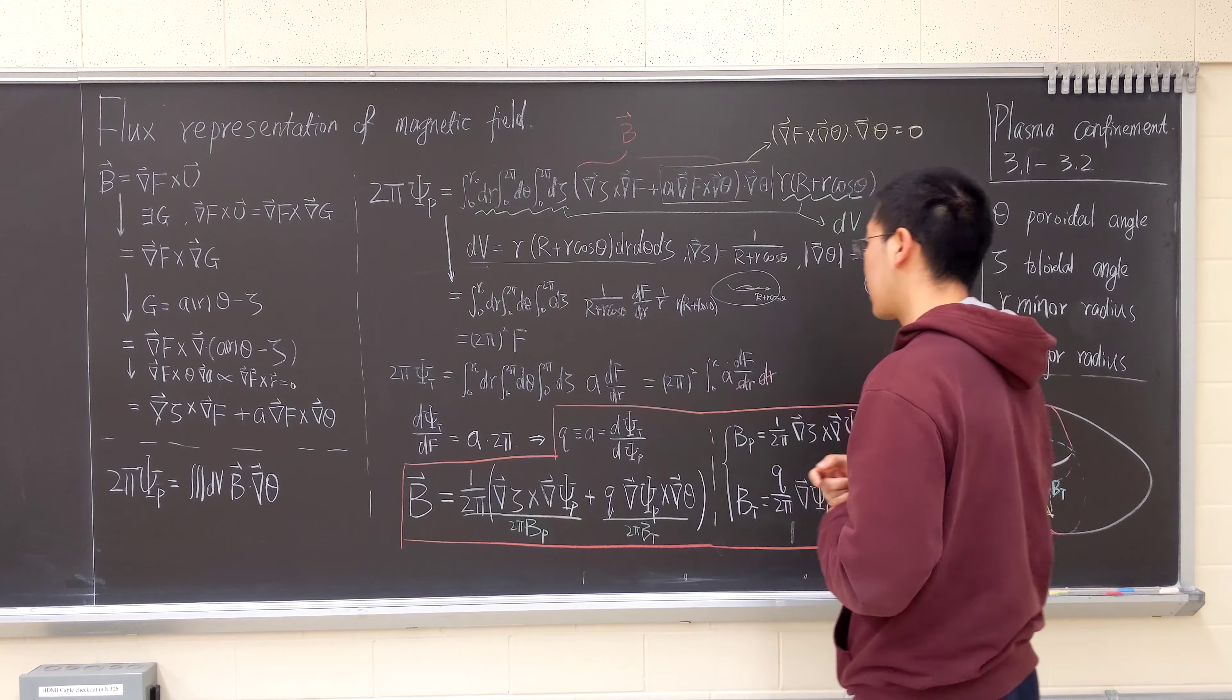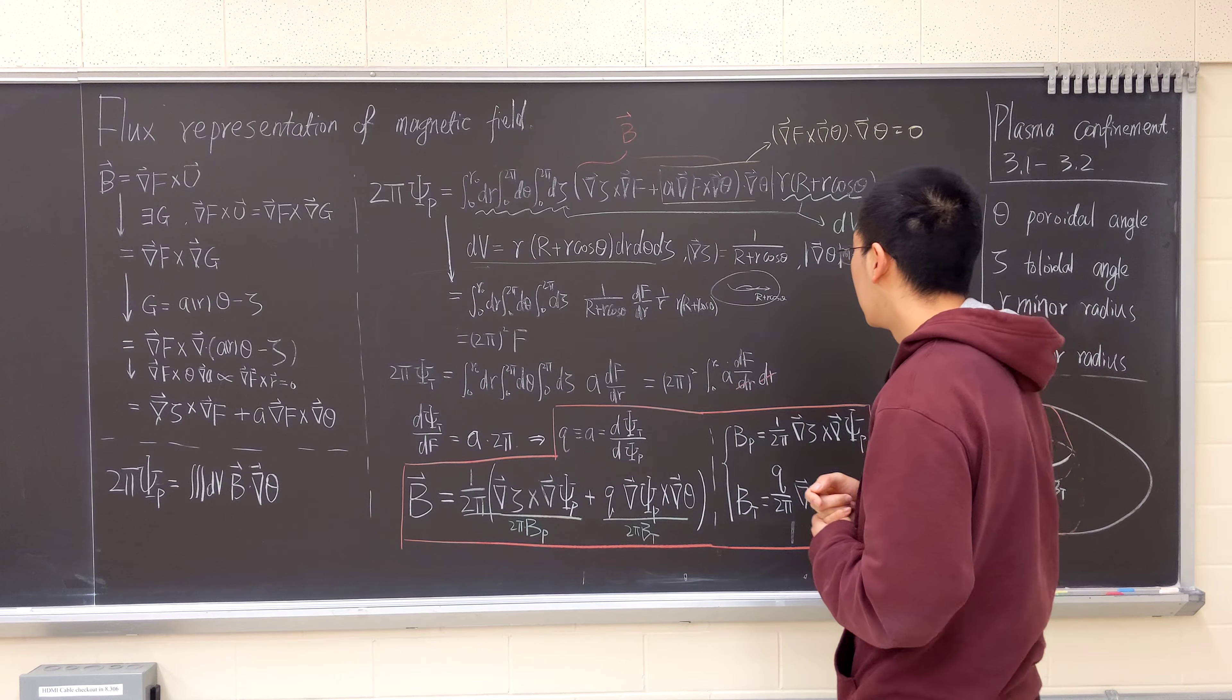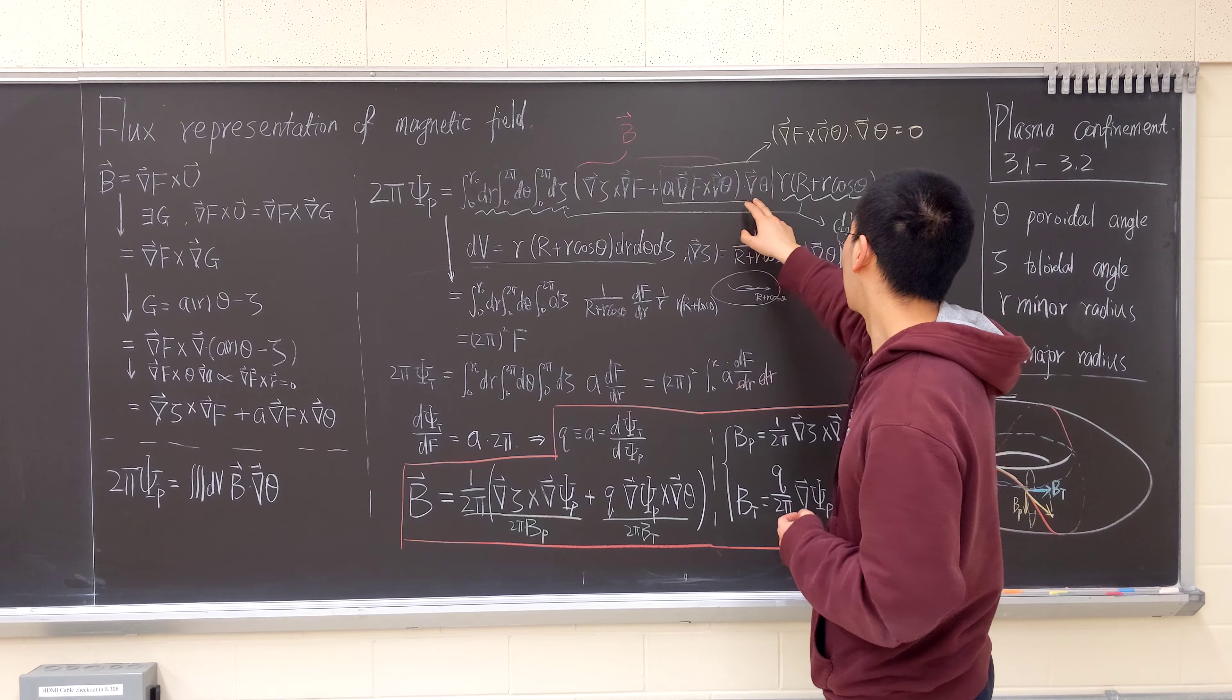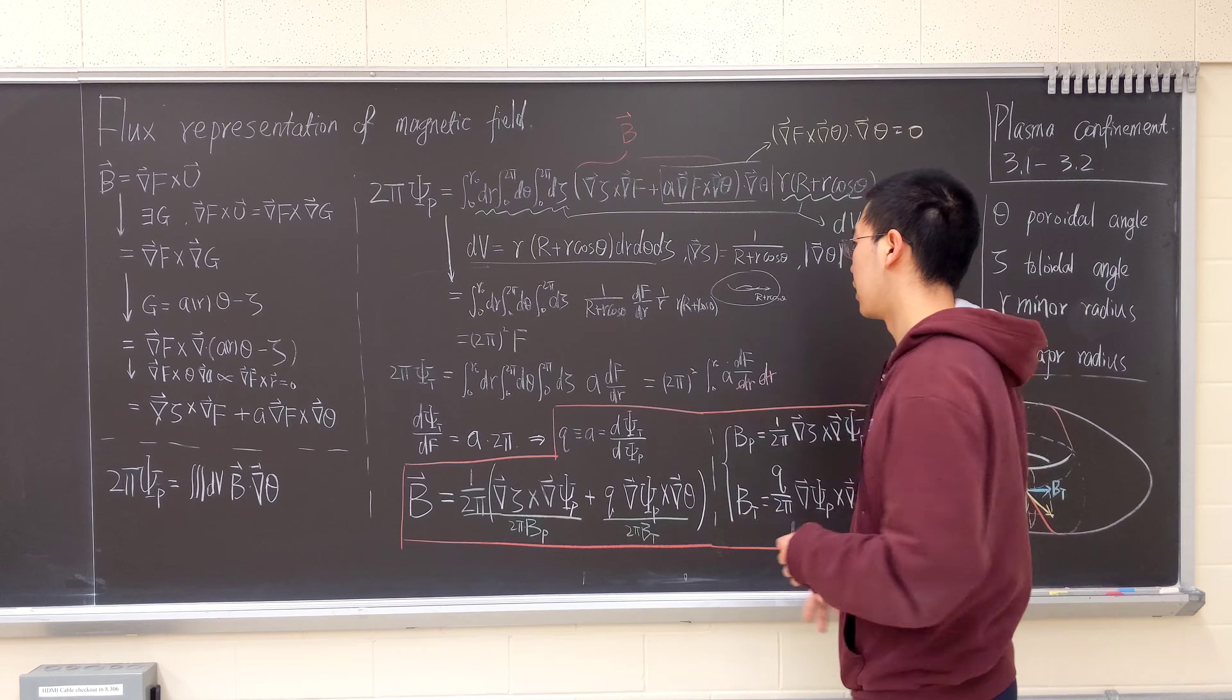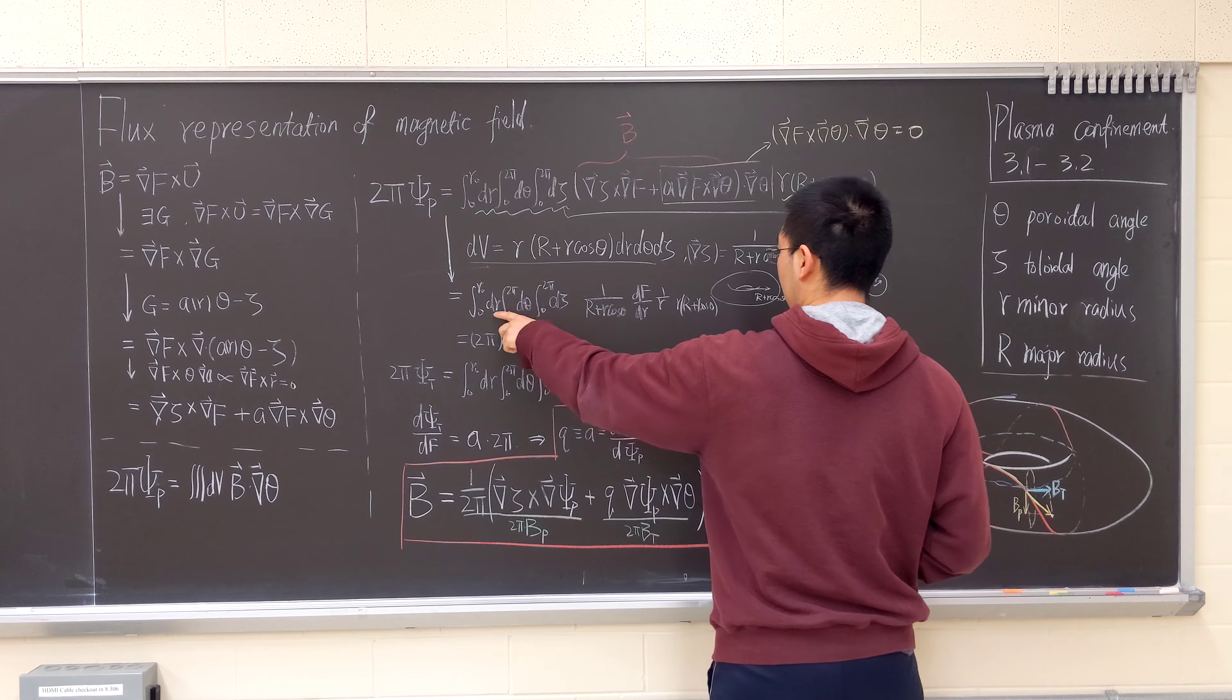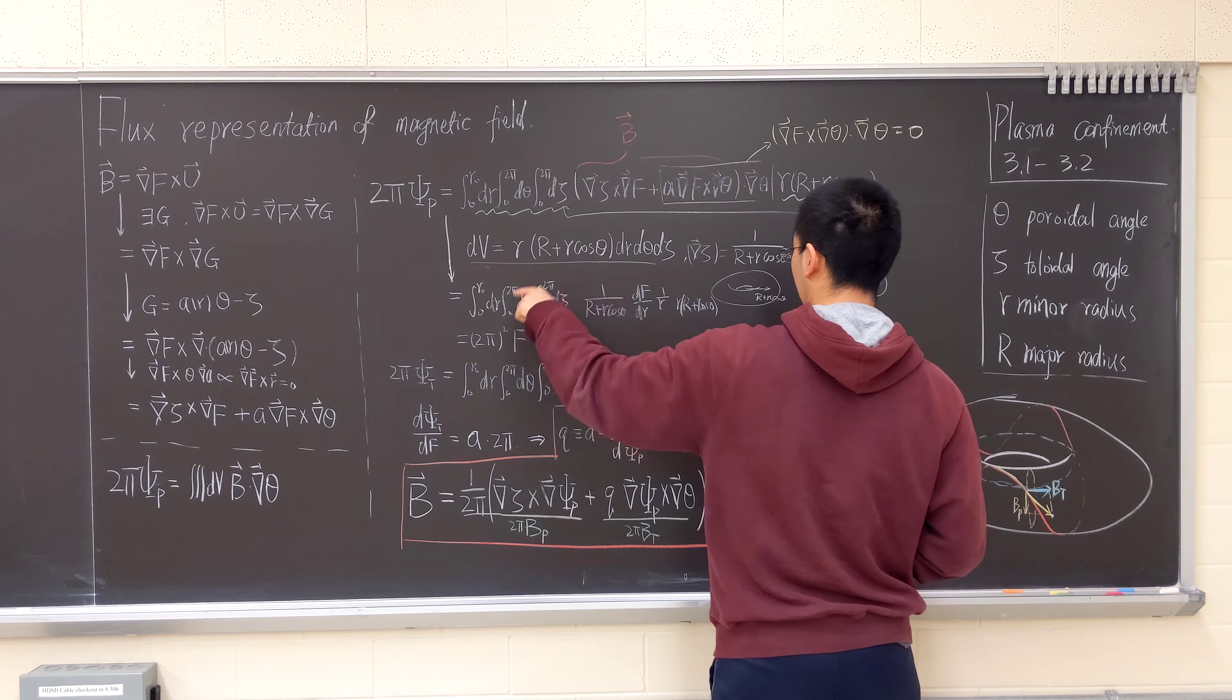So this is one over R plus r cosine theta, and this is one over r. This volume element cancels out, this whole thing cancels out. We're left with only dF dR, and then integrated it becomes F. We integrate in terms of poloidal angles, and it will become two pi squared.